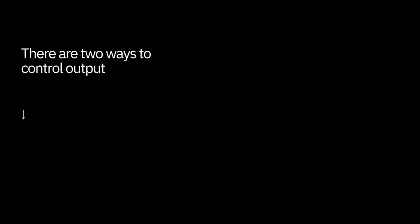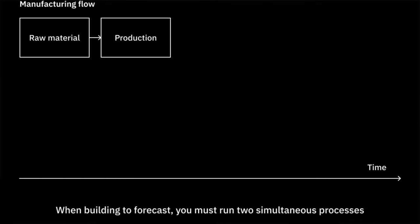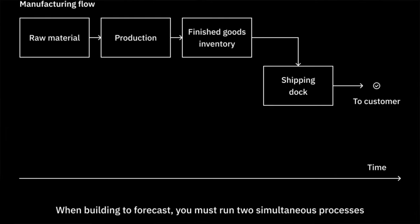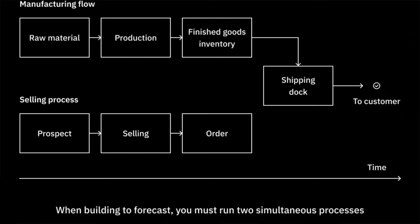There are two ways to control output. One, build to order: making breakfasts as requested. And two, build to forecast: making breakfasts in expectation of orders. Build to order reduces inventory risk but slows production times. In contrast, build to forecast suffers when orders are higher or lower than the forecast. When building to forecast, you must run two simultaneous processes: one, manufacturing — raw material moves through production and becomes a finished good — and two, selling — sales finds prospects and sells the product. Ideally, these two processes finish at the same time, with the order from the prospect arriving just as the product is finished. In practice, this is rare. Orders might not come in in time, customers can change their mind, and manufacturing can miss deadlines or hit unforeseen issues.